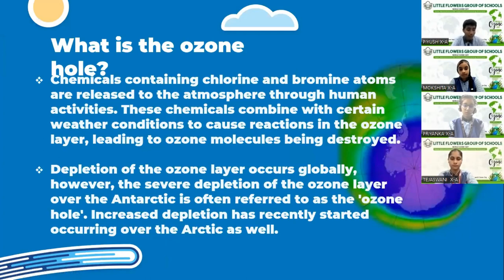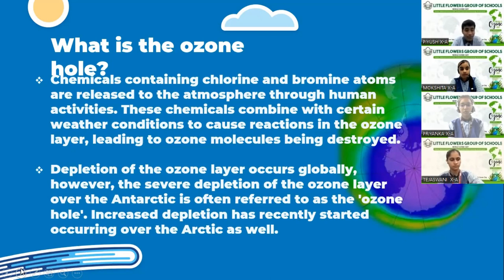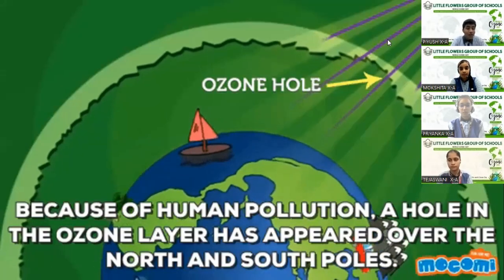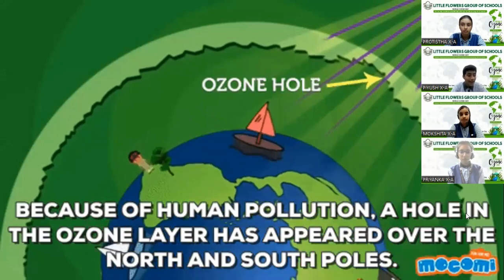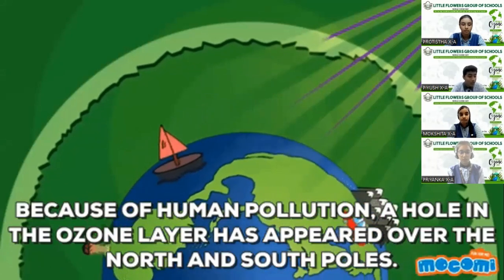During the discussion, a new word was introduced: ozone hole. The chemicals containing bromine and chlorine atoms are released into the atmosphere through human activity. These chemicals combine with certain weather conditions to cause reactions in the ozone layer, leading to ozone molecules being destroyed. Depletion of the ozone layer occurs globally. However, the severe depletion of the ozone layer over the Antarctic is often referred to as the ozone hole. Increased depletion has recently started occurring over the Arctic as well. This ozone hole covers a huge area of 27 million square kilometers.